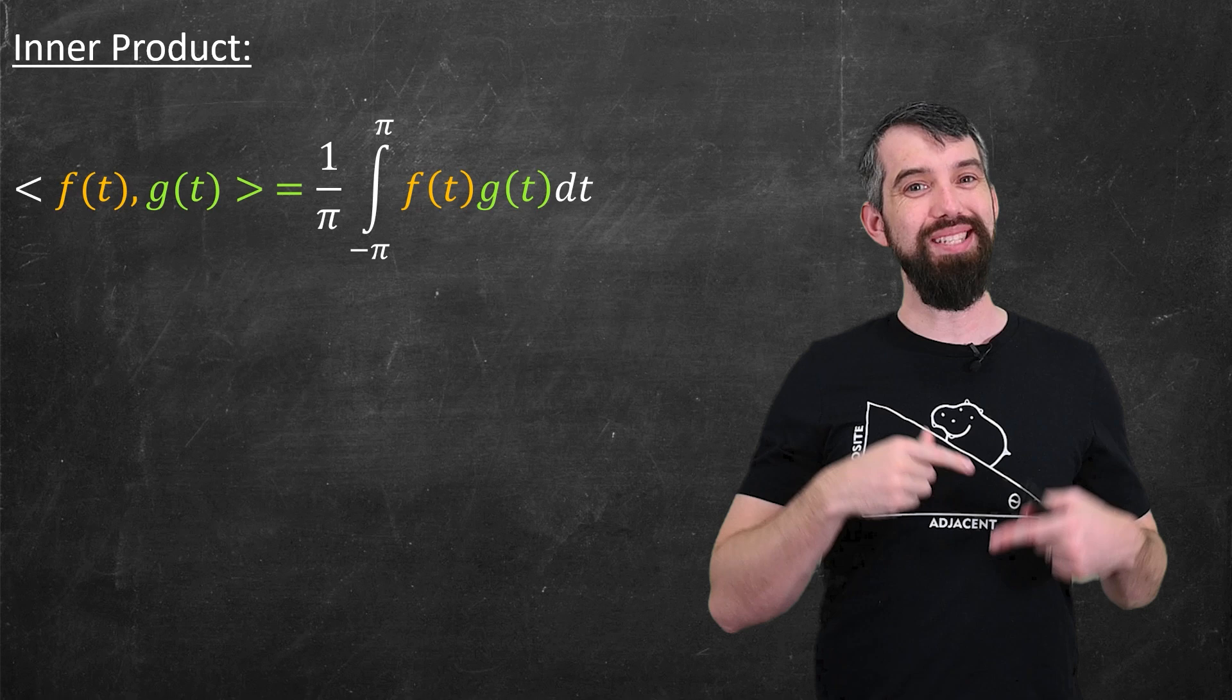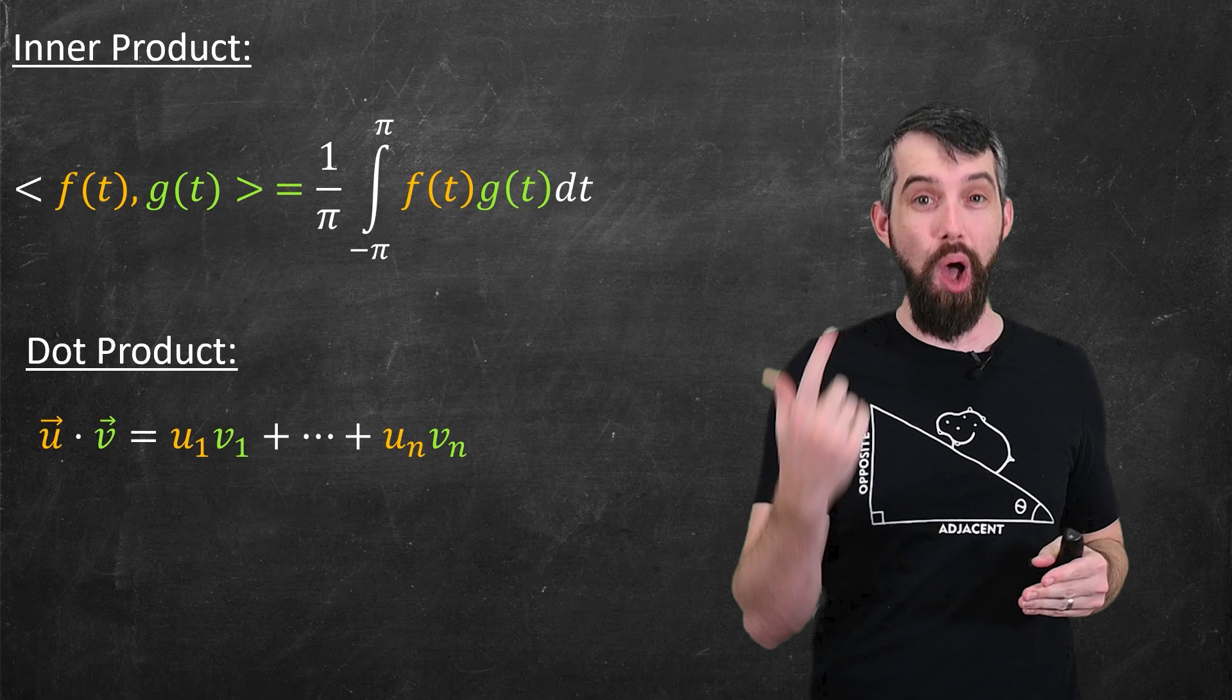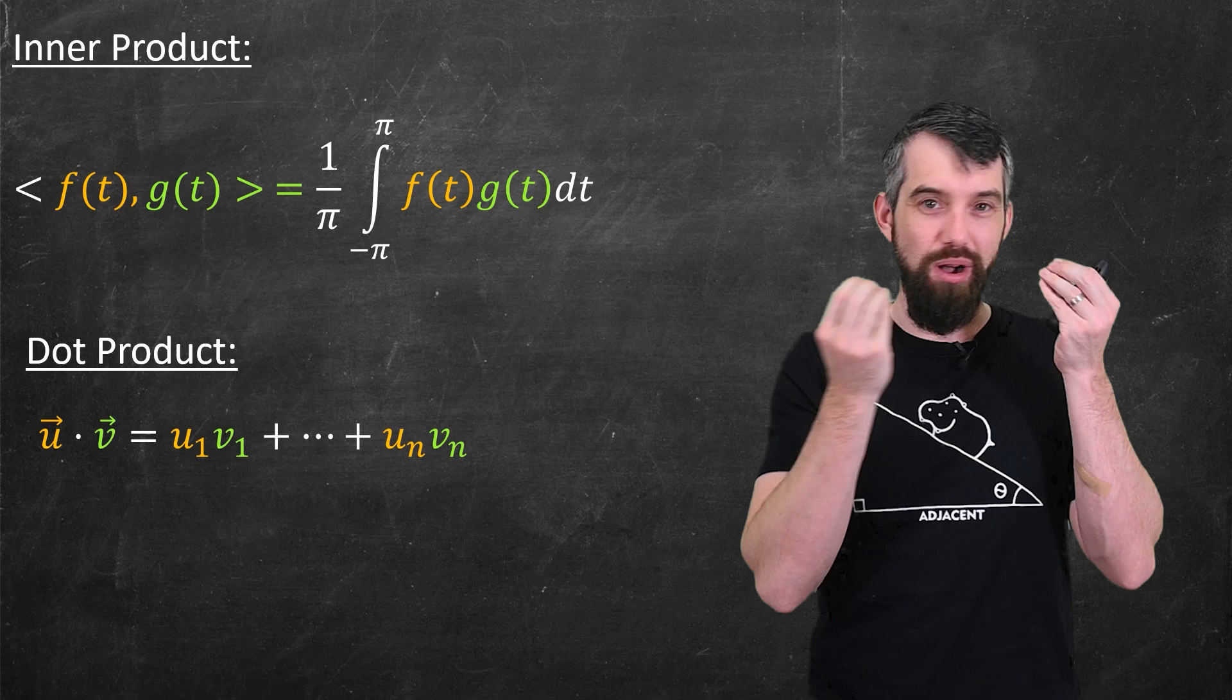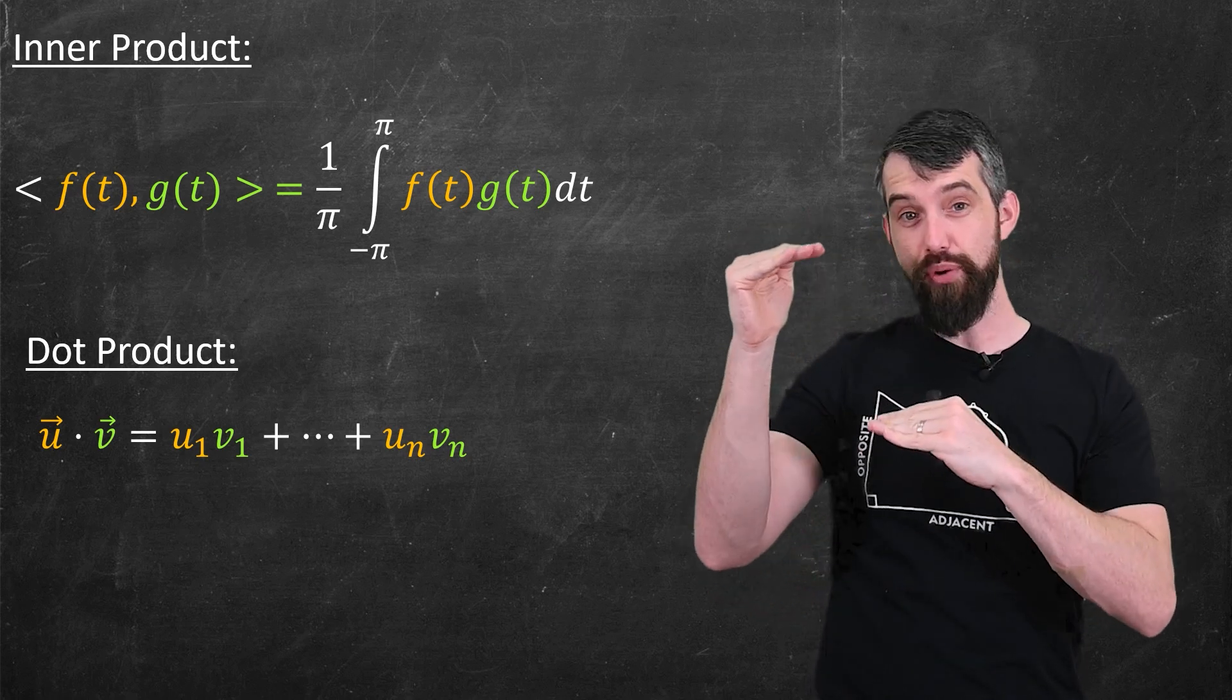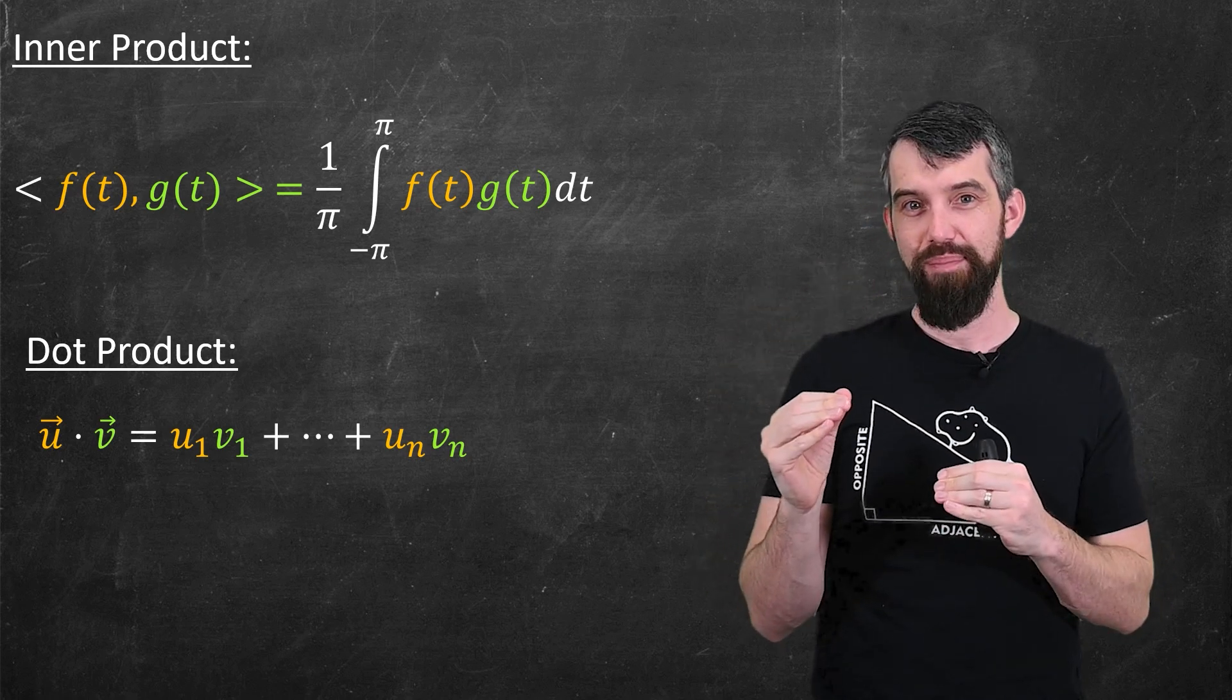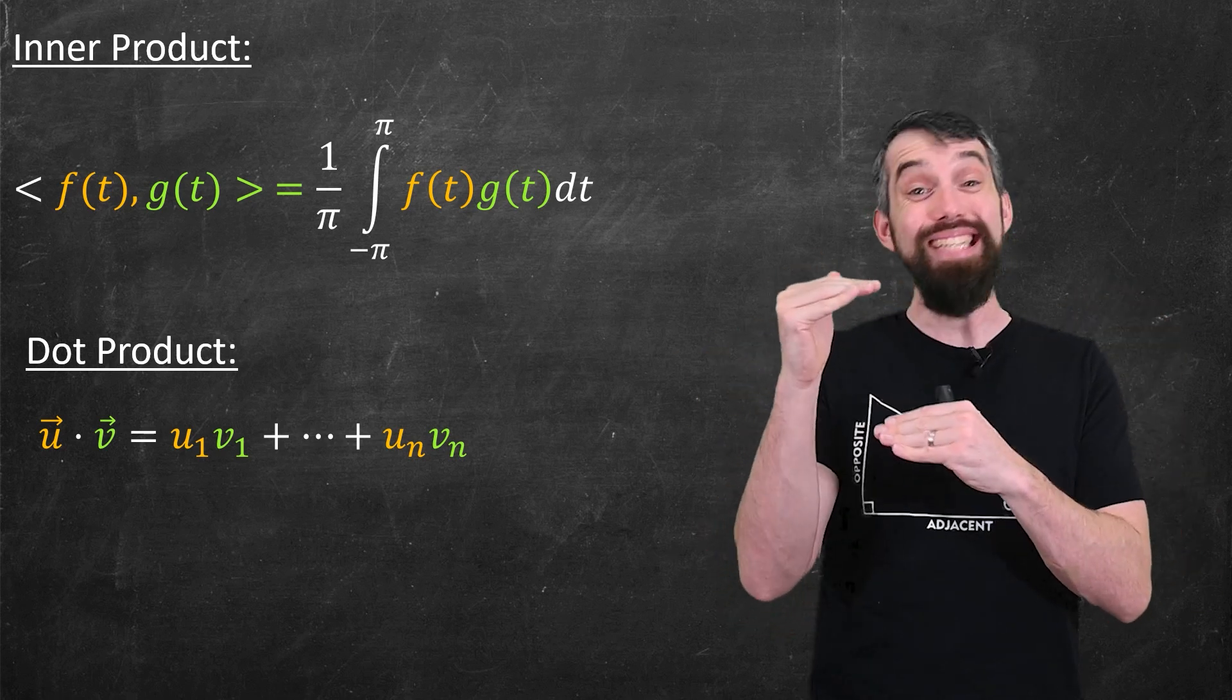This inner product should seem vaguely familiar to other products that we might have seen. For example, in linear algebra we have the dot product that takes in two vectors u and v, also spits out a real number, and it basically does it by multiply the first two components, multiply the second two components, and so on. These two inner products obey a similar set of rules for inner products, but more importantly, they're very analogous. An integral, after all, is sort of a continuous sum, so the fact that one's a sum and one's an integral is sort of a continuous version of the other.